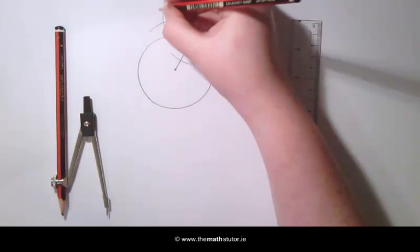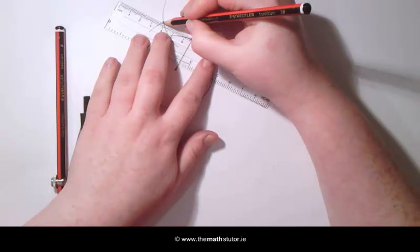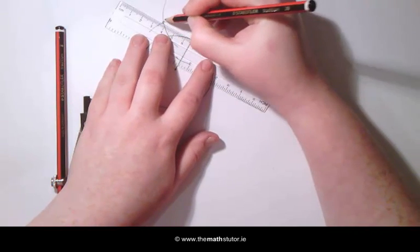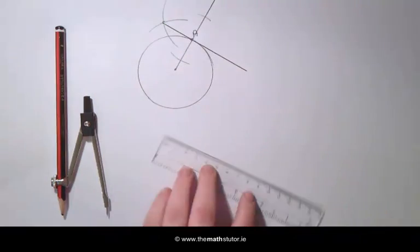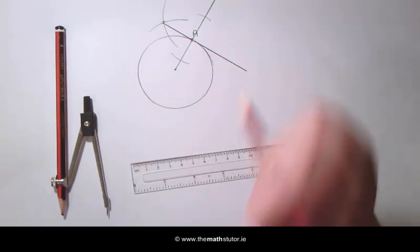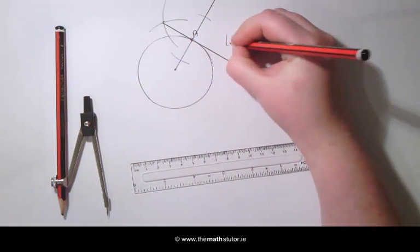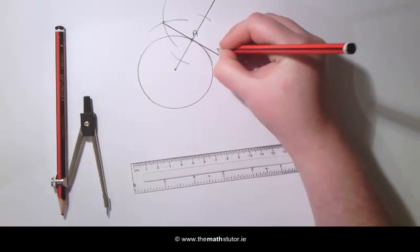Mark this point of intersection and using a straight edge, we are going to draw a line from here to our point A. And here we can see we have a line that goes through A and touches the circle only once. This is called our tangent.